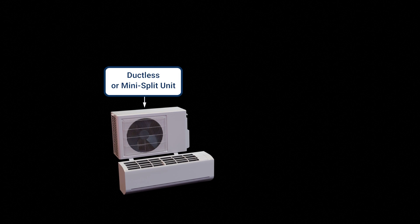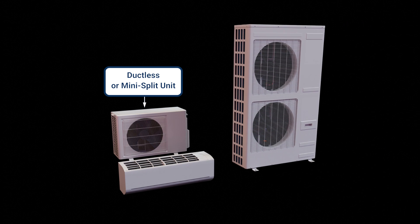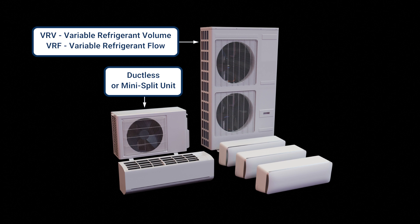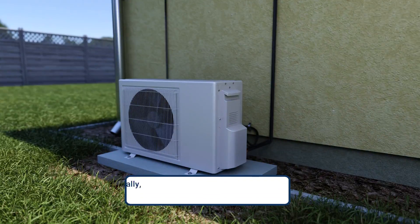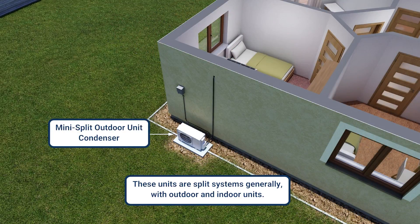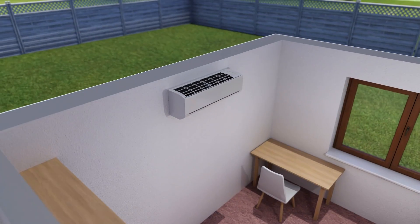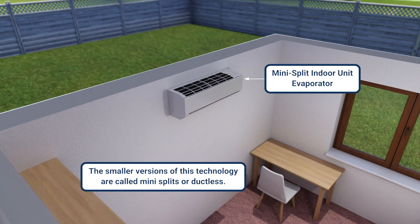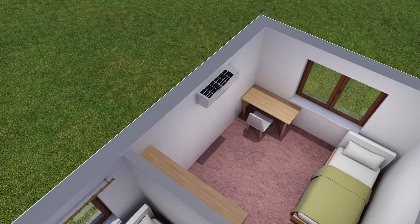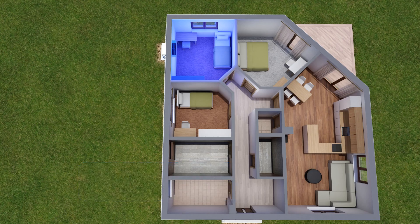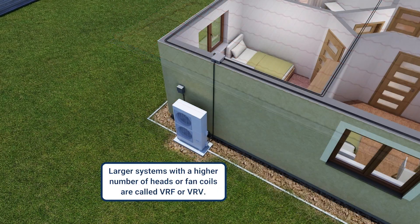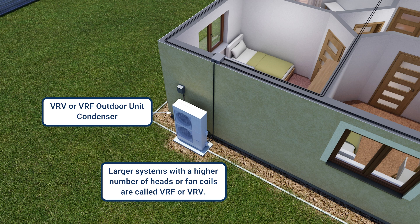Ductless or mini-split units, along with variable refrigerant flow and variable refrigerant volume systems in commercial, offer precise temperature control to multiple zones or rooms, often without ductwork or with less ductwork. These units are split systems generally, with outdoor and indoor units. The smaller residential versions are usually called mini-splits or ductless, and the larger systems with a higher number of heads or fan coils are called VRF, Variable Refrigerant Flow, or VRV, Variable Refrigerant Volume.